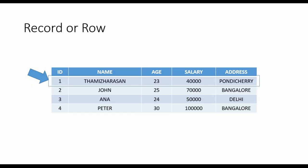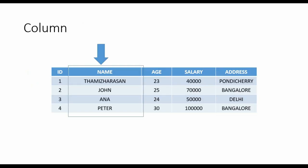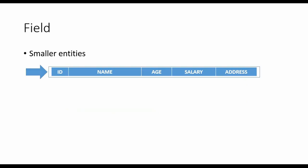A row or record holds particular information — it might be about a customer or a person, and so on. In this table, the columns are ID, name, age, salary, and address. In RDBMS, we can create relationships between two different tables using keys, which we'll be covering in the next video.